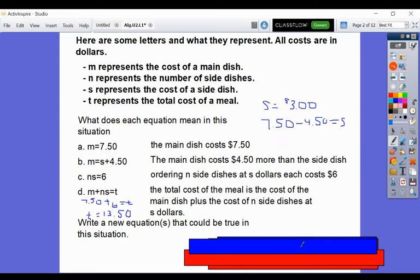So those are just a few equations. The last one, N. If we know N times S, which is 3, equals 6, we know that 6 divided by 3 equals N. So N equals 2.